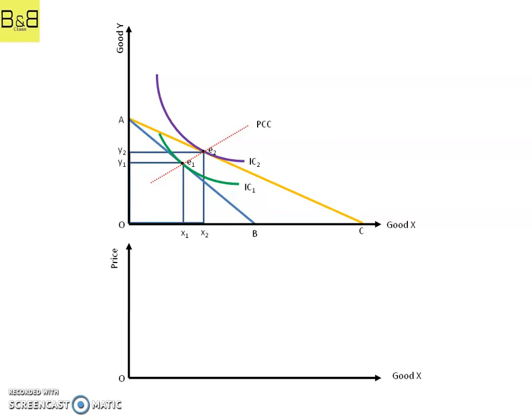At point E1, when the consumer was in initial equilibrium, let us suppose P1 was the price of good x, so that the consumer was consuming x1 quantity of good x.